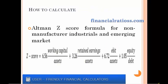How do we calculate the Altman Z-Score for non-manufacturing, industrials, and emerging market? Data needed to calculate this ratio is collected from the balance sheet, the income statement, the stock market bulletin, or the cash flow statement. In order to calculate this ratio, you have to first divide the working capital by assets and multiply by 6.56, then add the retained earnings divided by assets and multiplied by 3.26, then add the EBIT divided by assets and multiplied by 6.72, and lastly add equity divided by debt and multiplied by 1.05.